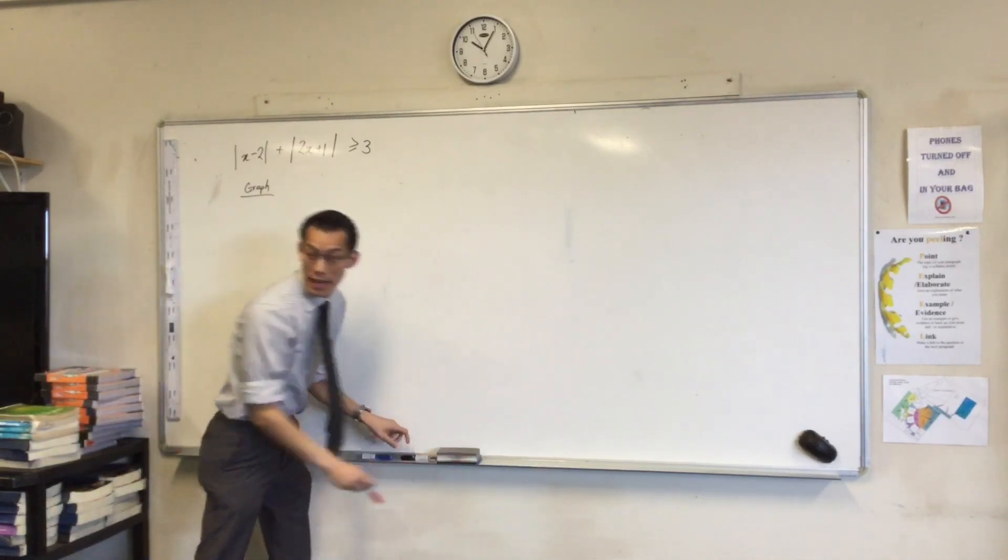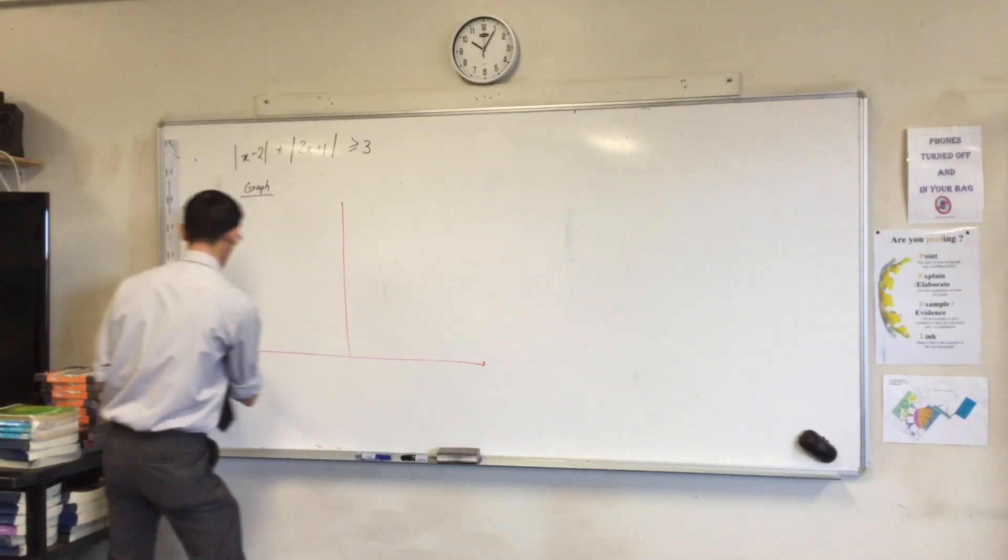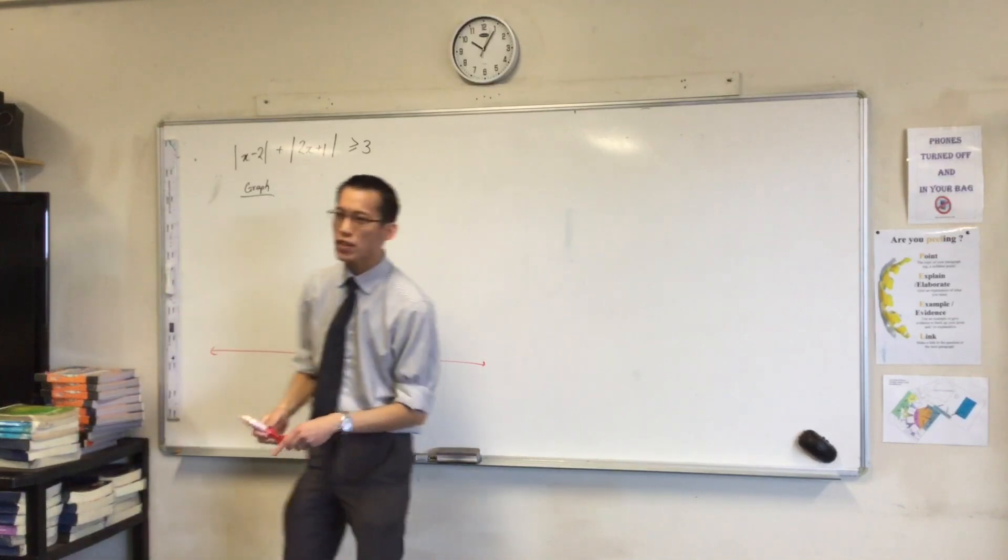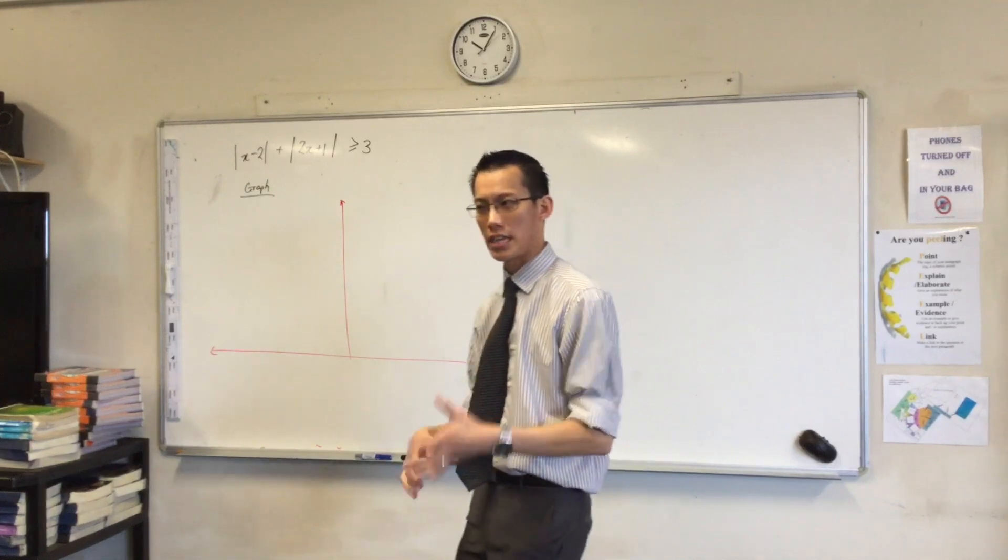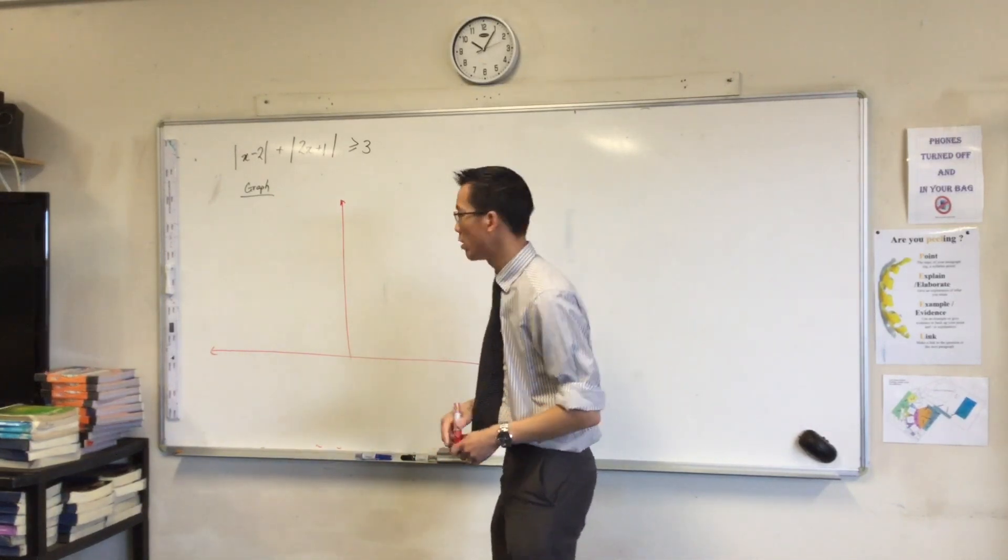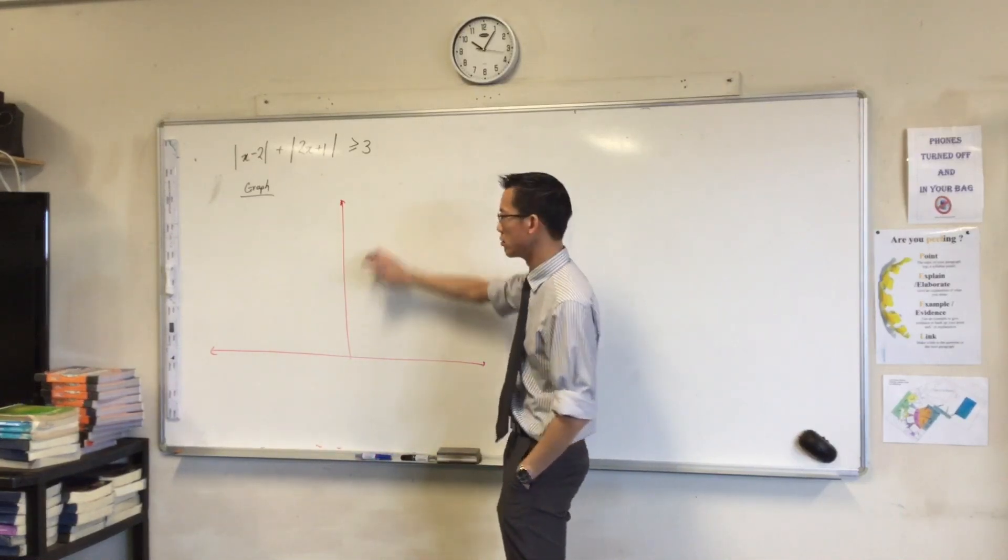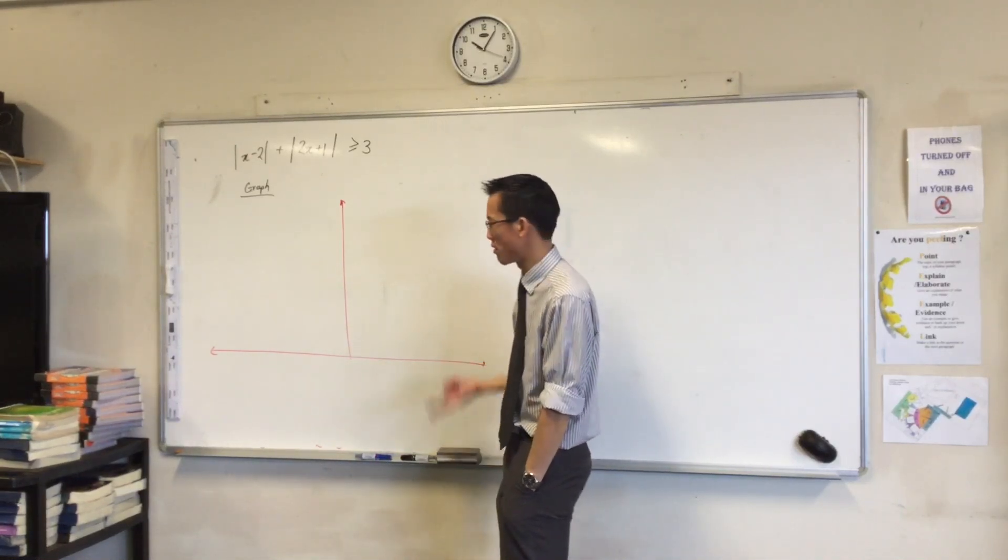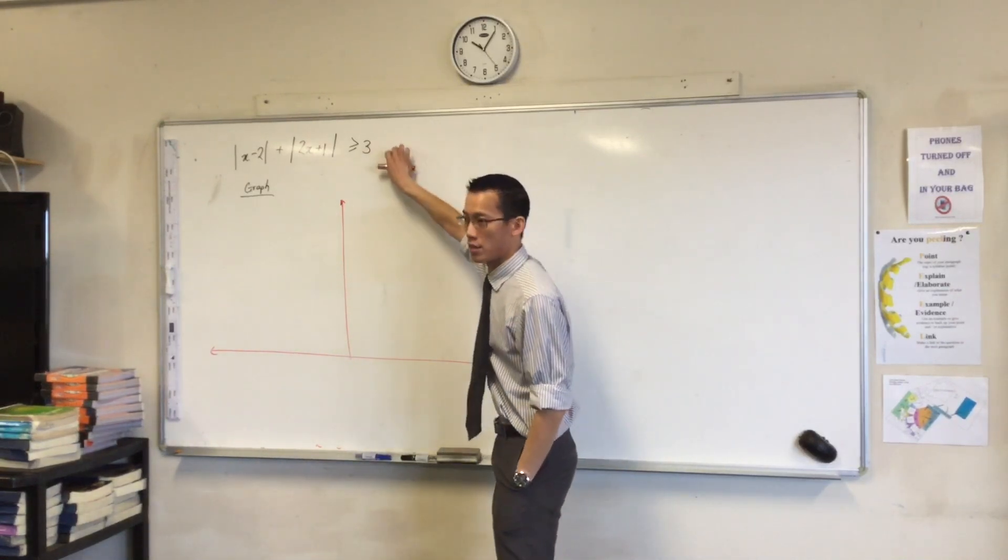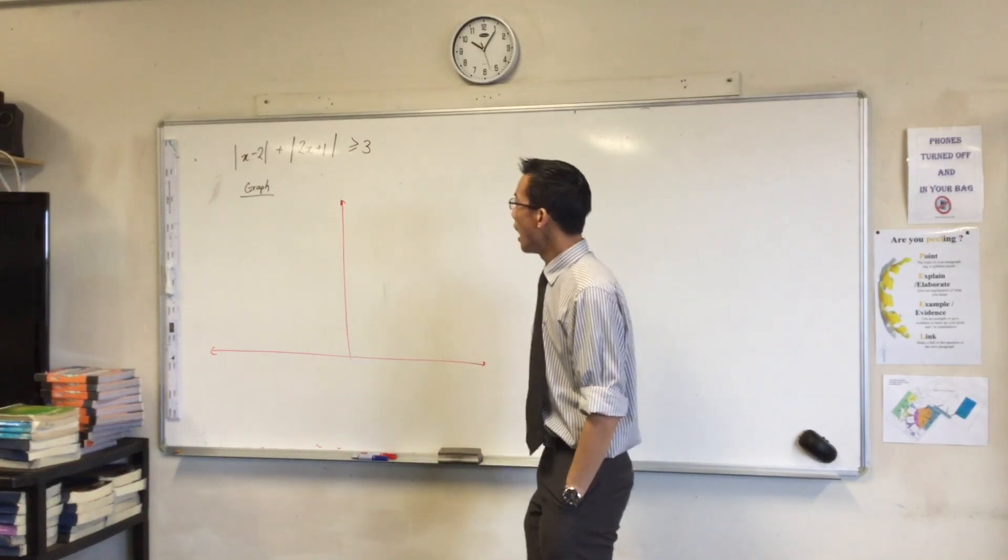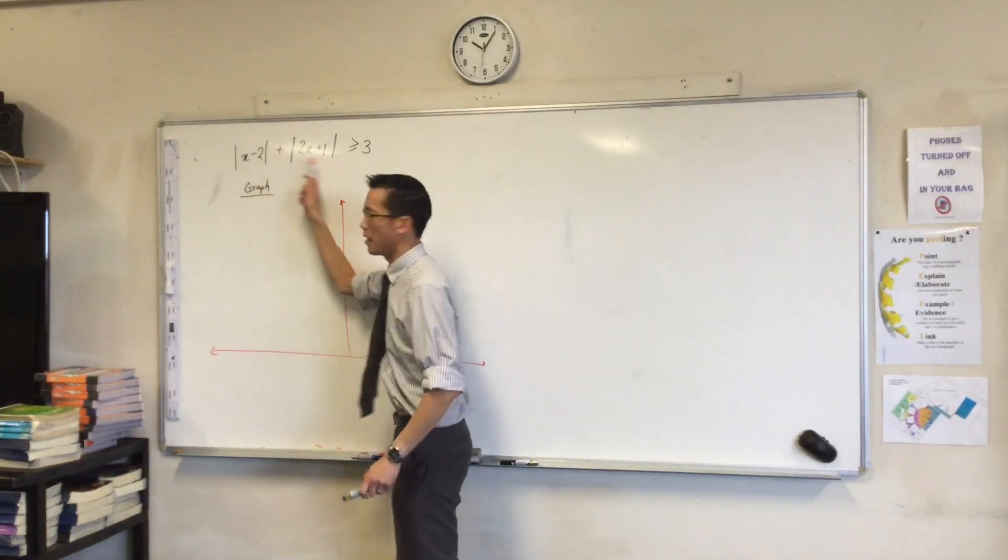So draw up a nice big set of axes. And what I'm going to do is, if the question were part A, graph, I would have to pay quite a lot of attention to the specifics of the graph itself, because the question is graph. However, if the question is just solve this, and I'm using the graph as a tool, the graph doesn't have to be beautiful or anything. You don't even have to use a ruler necessarily. It just has to be good enough so that you can use it as a guide to solve the question.